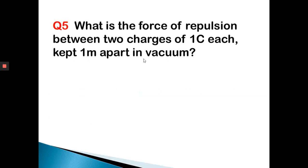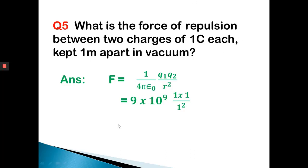Question 5: What is the force of repulsion between two charges of one coulomb each kept one meter apart in vacuum? Q1 equals Q2 equals 1 coulomb, distance equals 1 meter. Using the formula F equals 1 by 4 pi epsilon-0 times Q1 Q2 by R-squared, we substitute 9 into 10 to the power 9 for 1 by 4 pi epsilon-0. With Q1, Q2 each 1 coulomb and distance 1 meter, the answer is 9 into 10 to the power 9 newtons.